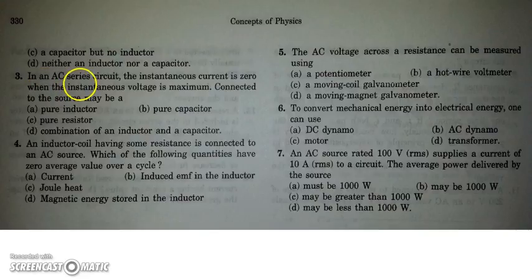In the third question, there is an AC circuit. The instantaneous current is 0 when the instantaneous voltage is maximum. So we can say the phase difference between them is pi by 2. And what we can say about the circuit? The phase difference will be pi by 2 when it is pure inductor, when it is pure capacitor.